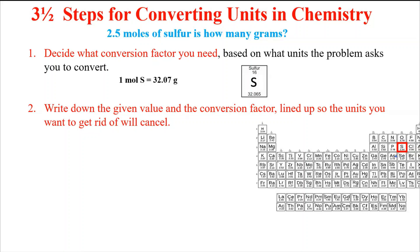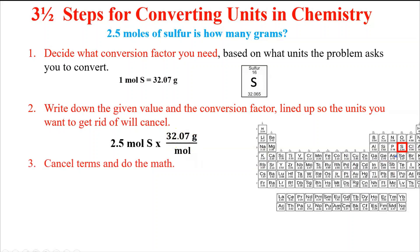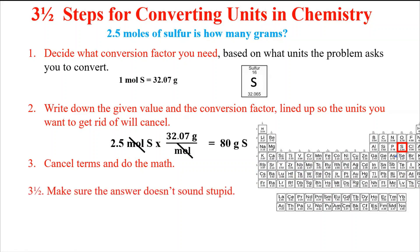The given value is 2.5 moles of sulfur, and the conversion factor is 32.07 grams per mole. We line them up, cancel the moles, multiply across, and after rounding to two significant figures — because the given value has two significant figures — we get 80 grams of sulfur. The last half-step is to just make sure you don't have a stupid answer: check that the answer makes sense and is in the right units.